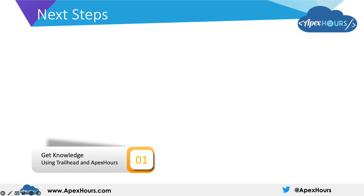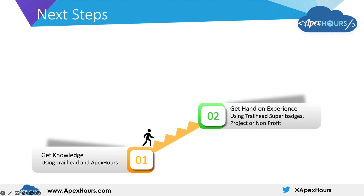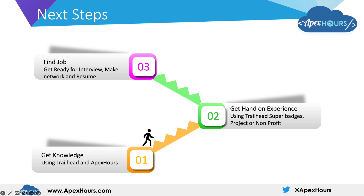So, to summarize the next steps: first, get the knowledge — use Trailhead or Apex Hour free training to learn development. Then get hands-on experience through Trailhead, Superbadges projects, and nonprofit work. Once you are doing that, get interview-ready by networking, preparing your resume, and getting ready for interviews.